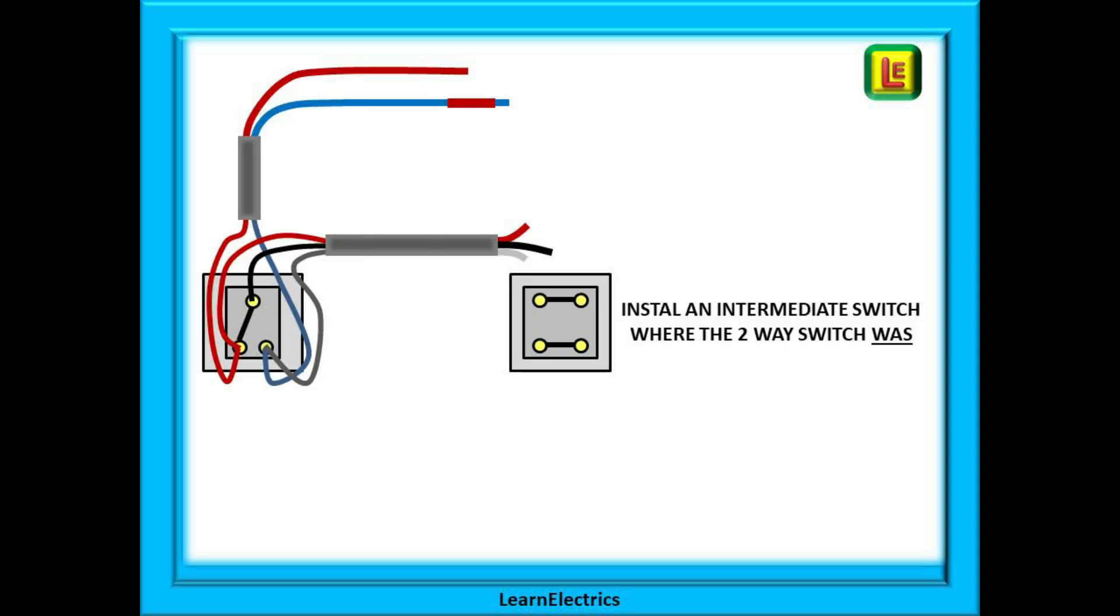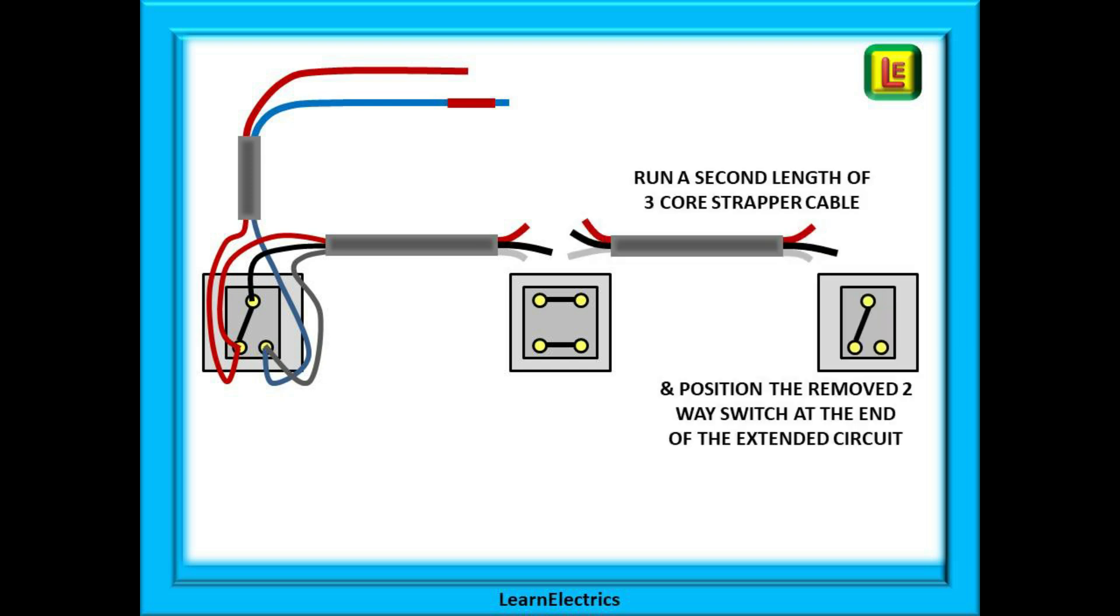Now install the intermediate switch into the space where the removed two-way switch was. Add another three core plus earth strapper wire from this switch to the new switch, in our example the new garage doorway, and position the previously removed two-way switch by the garage door.